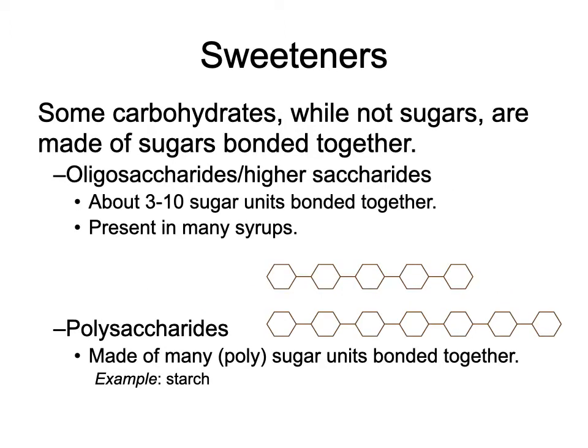Some carbohydrates, while not sugars themselves, are made of sugars bonded together. Oligosaccharides and higher saccharides get into the family called starches — basically long chains of molecules bonded together. When broken into smaller units they break down into mono- and disaccharides. A green banana seems starchy, but as it ripens, those polysaccharides start to break apart and the banana becomes sweeter because starches have converted into sugars. The same thing happens in baked products — starches convert into sugars, allowing for nice browning.